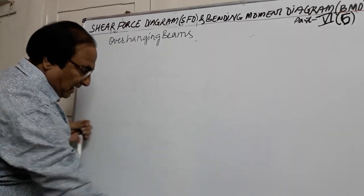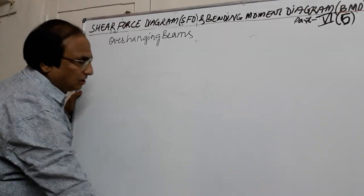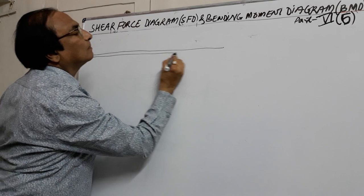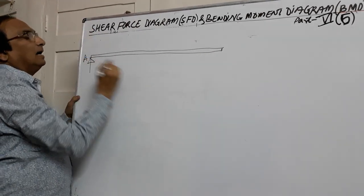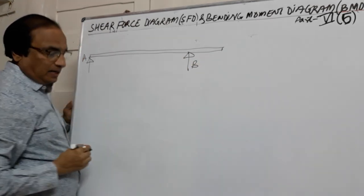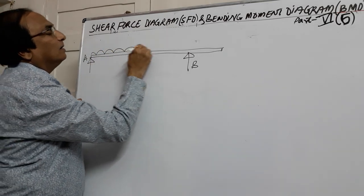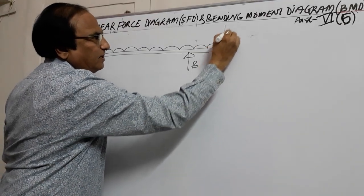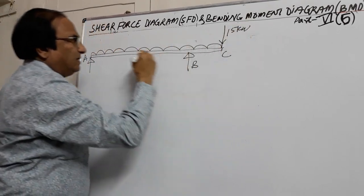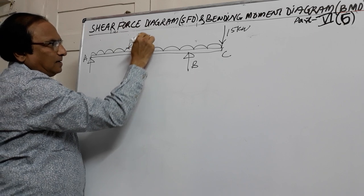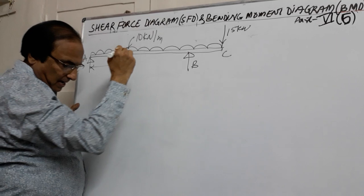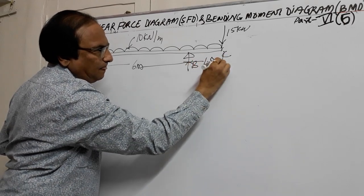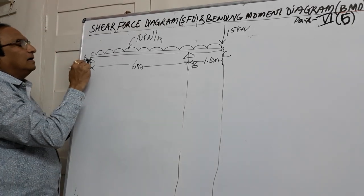Today we will see this with a simple example to draw the bending moment diagram and shear force diagram for an overhanging beam. Suppose this is a beam with support at A and another support at B. This is the overhanging part. It is subjected to a UDL from one end to the other end C. In addition, there is a concentrated load of 15 kN acting here. The UDL is 10 kN/m, the span is 6 meters, and the overhanging part is 1.5 meters. We are required to draw the SFD and BMD for this.